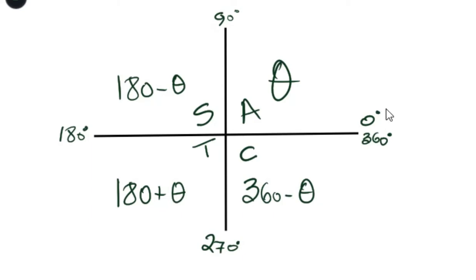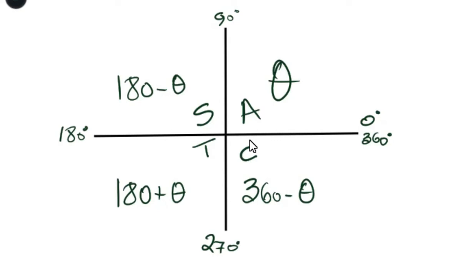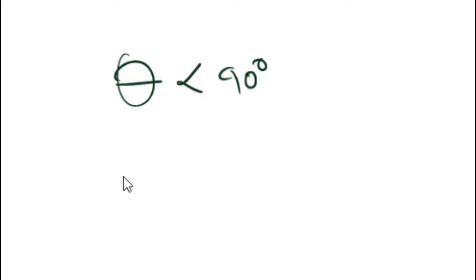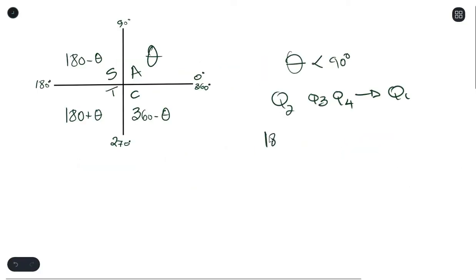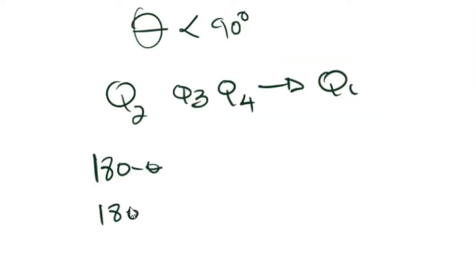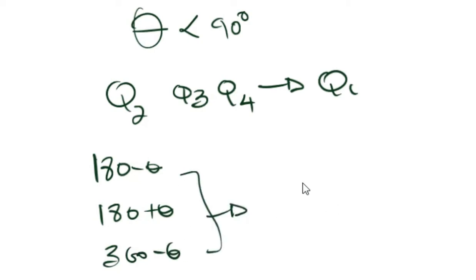From the last video, we talked about quadrants — the equations of quadrants and what each quadrant represents. This is very important in understanding reduction formula. The first thing you need to understand is that in the first quadrant, theta is less than 90 degrees. The goal of reduction formula is to take quadrant 2, 3, and 4 — that is, 180 minus theta, 180 plus theta, and 360 minus theta — and reduce them all into theta.